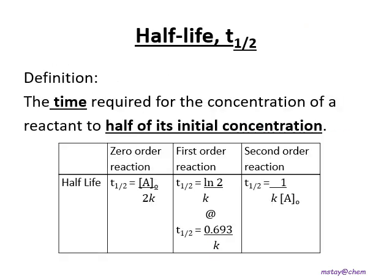Now let's look at the term half-life. The definition of half-life is the time required for the concentration to become half of its initial concentration. There are three formulas for half-life. For zero order: t½ = [A]₀ / 2K. For first order: t½ = ln2 / K, which is also 0.693 / K. For second order: t½ = 1 / (K × [A]₀).